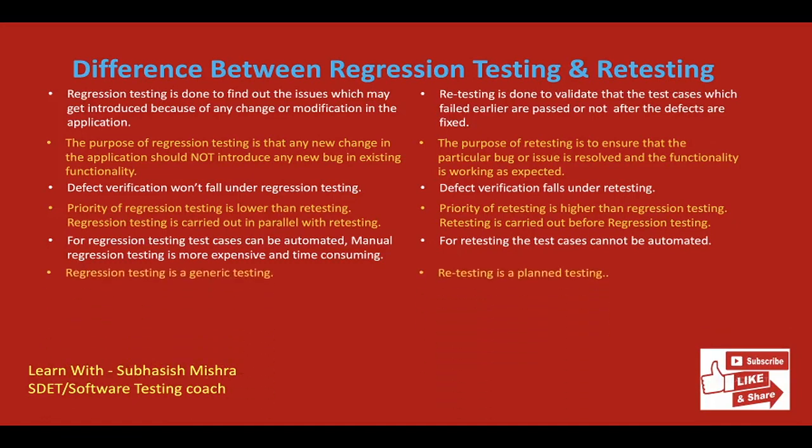Regression testing is a generic testing whereas retesting is a planned testing — we can do the planning properly for a retest of a defect. Regression testing is done on past test cases; retesting is done only on failed test cases. We know we are retesting a defect, so retesting is done only on failed test cases — when we say it is a defect, it means it was failed previously. But regression testing is done on existing functionality which is already in production or already used by the customer, so those test cases were already passing.